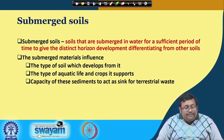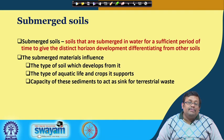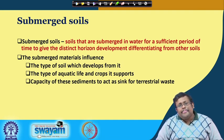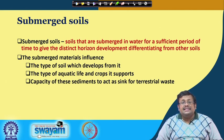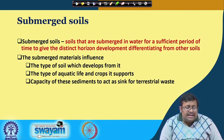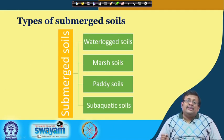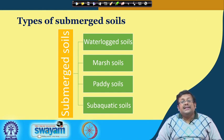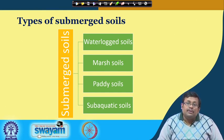Submerged soil material generally influences the type of soil that develops from it, the type of aquatic crop it supports, and the capacity of these sediments to act as a sink for terrestrial waste. There are 4 types of submerged soils: waterlogged soils, marsh soils, paddy soils, and subaquatic soils.